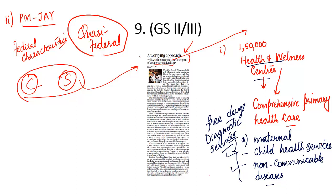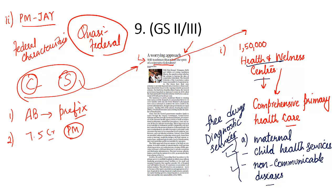The writer says Ayushman Bharat might hurt cooperative federalism. He cites two examples. First, the central government has insisted on using 'Ayushman Bharat' as a prefix to existing state schemes. Second, the central government dispatched a personalized letter to 7.5 crore families with only the Prime Minister's photograph — an attempt to attribute entire credit to the central government, when state governments are equal partners funding 40% of the scheme and implementing it.